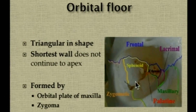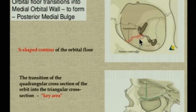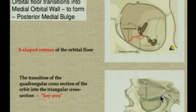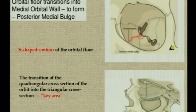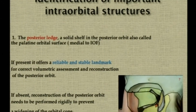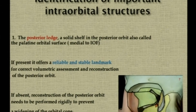The orbital floor is triangular in shape and the shortest wall. Its shape is the most important consideration. First, where the floor merges with the medial wall there is a posterior medial bulge. Second, in sagittal section there is an S-shaped contour — a concavity that then inclines upward towards the apex. Third, there is a transition zone behind the mid-orbit where the quadrangular shape becomes triangular. These three points — the posterior medial bulge, the S-shaped contour, and the transition key area — have a fundamental impact on globe position. The orbital plate of the palatine bone forms the posterior ledge, a reliable stable landmark for volumetric assessment. If it is absent, reconstruction must be performed rigidly to prevent widening of the orbital cone post-surgery.